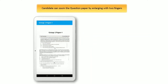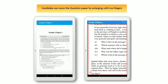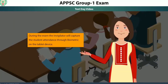The candidate can zoom the question paper by enlarging with two fingers. During the exam, the invigilator will capture the student attendance through biometric on the TABOT device.